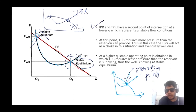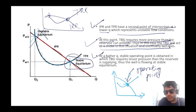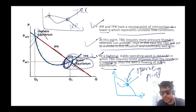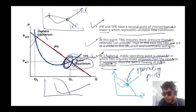The theory states: IPR and TPR have a second point of intersection at a lower flow rate, representing unstable flow conditions. At that point, the tubing requires more pressure than the reservoir can provide, so the tubing acts as a choke and eventually the well will die. At the higher flow rate intersection, stable operating conditions are obtained — the tubing requires less pressure than the reservoir supplies, so the well flows at stable equilibrium.